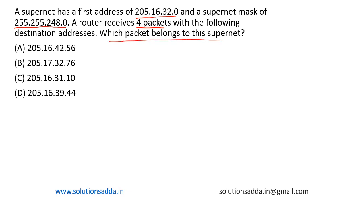By performing an AND operation between the supernet mask and the given IP addresses, if you obtain the first address of the supernet — that is this particular address — then we can say that the IP address is in the same supernet.